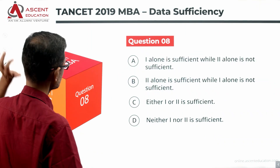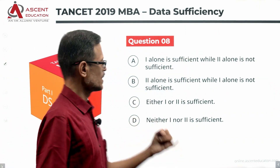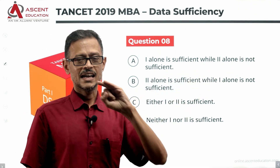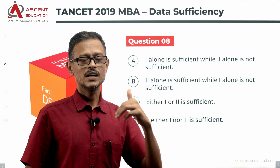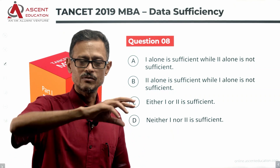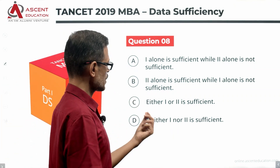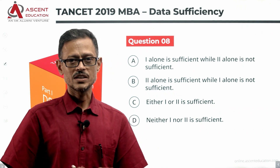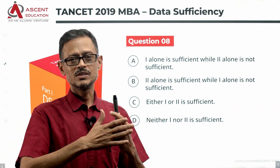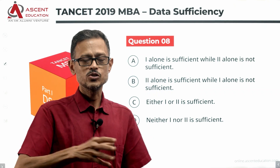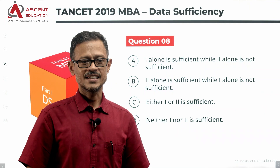Let's look at the answer options. Answer option A: statement one alone is sufficient, two is not. Answer option B: two alone is sufficient, one is not. Answer option C: either one or two alone is sufficient. Answer option D: neither one nor two is sufficient — both statements together are needed. With this perspective, let's get started.